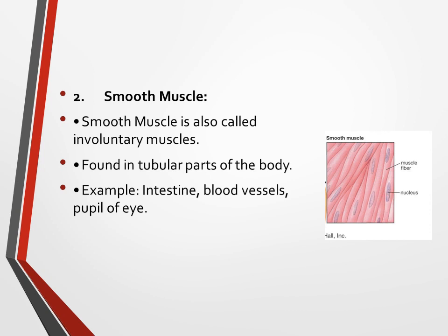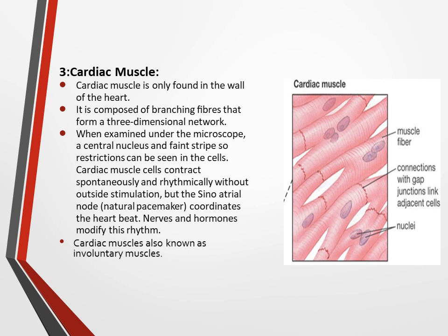The third type of muscle is known as cardiac muscle. They are only found in the wall of the heart, hence the name cardiac muscle. The cells are composed of branching fibers that form a three-dimensional network. When examined under the microscope, a central nucleus and faint striations can be seen. Cardiac muscle cells contract spontaneously and rhythmically without outside stimulation, but the sinoatrial node — the natural pacemaker — coordinates the heartbeat. Nerves and hormones modify this rhythm. Cardiac muscles are involuntary muscles.